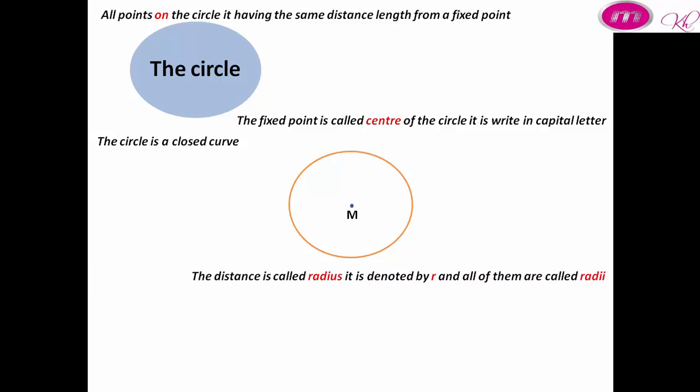The distance is called radius. It is denoted by r, and all of them are called radii. MA is the radius. MA, MB, MC, and MD are radii, all equal in length. MA equals MB.